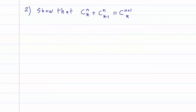Question 2 is called the Pascal identity, and we want to show that C(n,k) plus C(n,k-1) equals C(n+1,k). This identity is used a lot in probabilities, and we will actually use it later to show the binomial theorem.